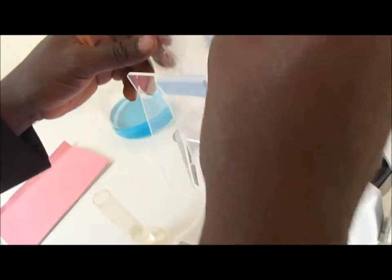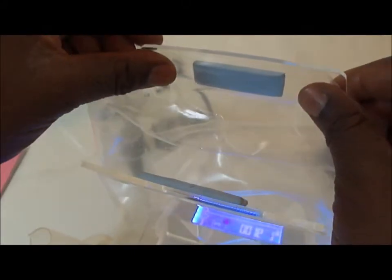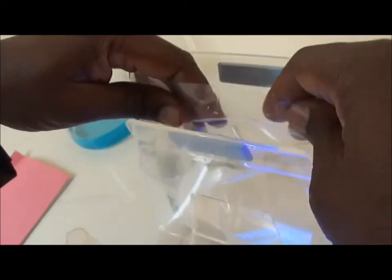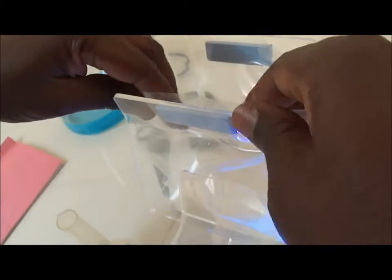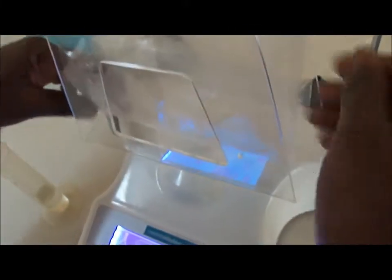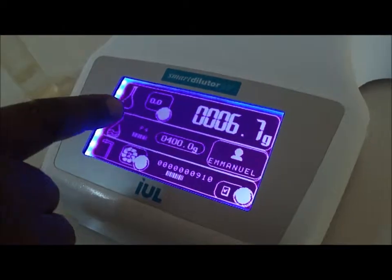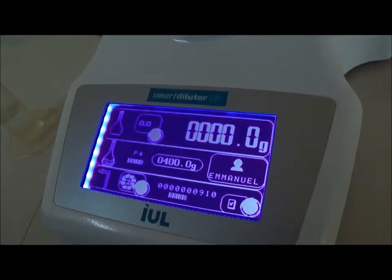The same way, we make the tare. So I put the bag and the weight is changing on the display. Then I will properly fix the opening of the bag by using the tape. And the bag is kept open at the top here. And carefully, I put the bottom of the bag on the support. You see the weight is different now. I make the tare by pressing this button.